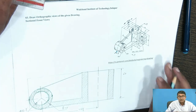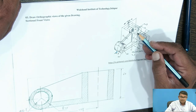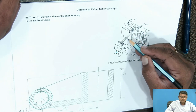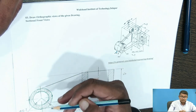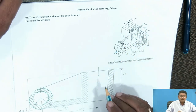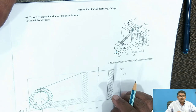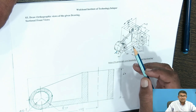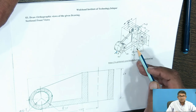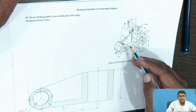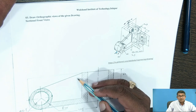Now pause the video and think over that. Why is the section of this rib portion not shown? This portion also gets cut here, but we will not show the hatched line. Because this is the supporting rib. By our principles and rules, the supporting rib is not a part of that object. That's why we need to take the section — but you will not show the hatching line for this rib portion; only the cut portion is to be there.